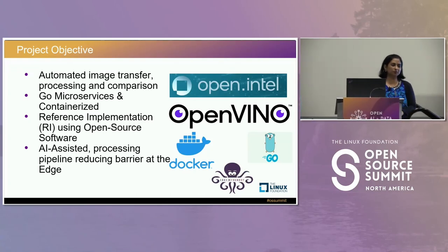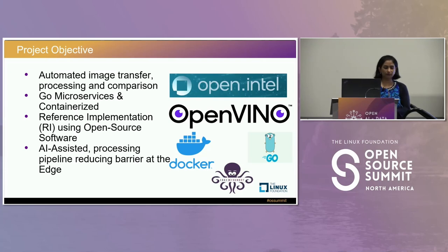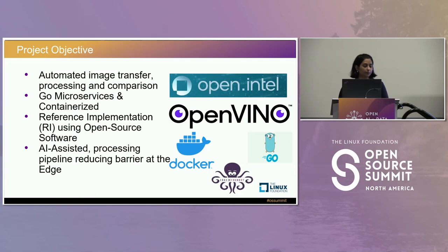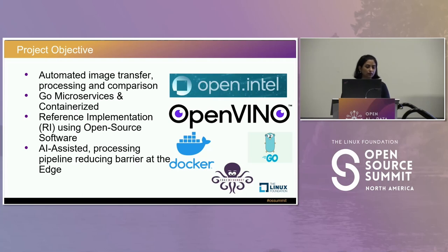Intel's team builds open source solutions available for everyone to use, helping partners or system integrators build their own customized solutions. This reference implementation is an automated image transfer, processing, and comparison solution covering the entire end-to-end machine learning pipeline. The entire solution is written in Golang and containerized with Docker. We have machine learning pipeline processes which are AI-assisted — we process images, do the inferencing, and display the results.